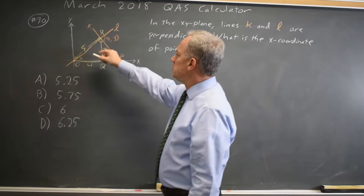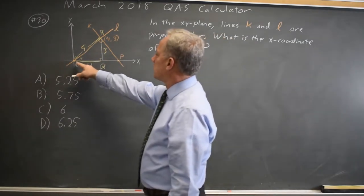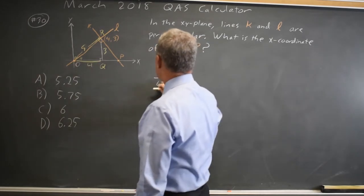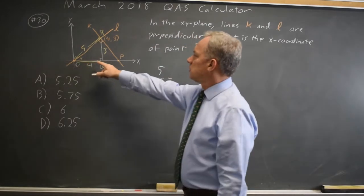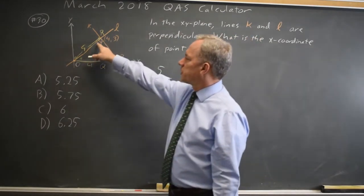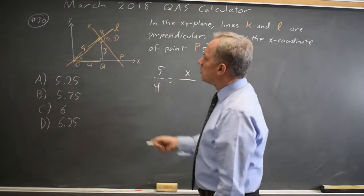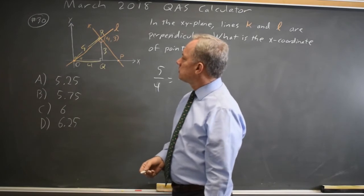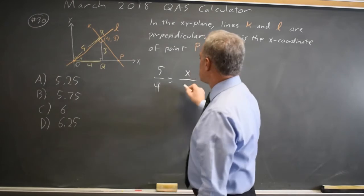So the hypotenuse 5 over the long side 4 equals the hypotenuse of ORP, which, since R is the right angle, is the x-coordinate of point P, over the long side, which is the side adjacent to this angle, which is 5.